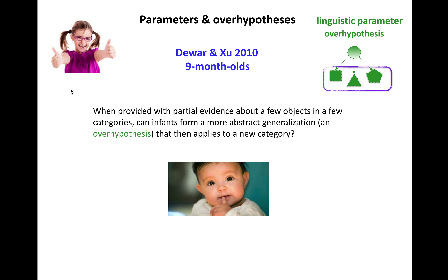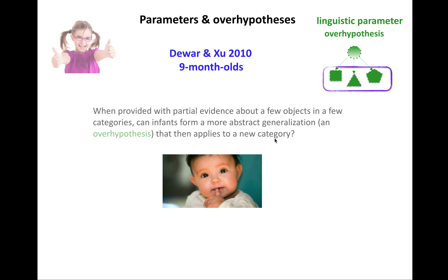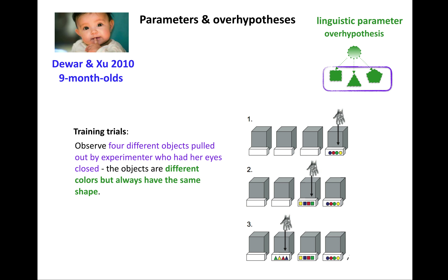Shue in 2010 looked at nine-month-olds to see if they show evidence of using over hypotheses — which are interesting because of how similar they are to linguistic parameters: one more abstract hypothesis connecting to a lot of very specific properties. In this experiment, the idea was that when infants were provided with partial evidence about a few objects and a few categories, can these infants form a more abstract generalization — an over hypothesis — that will then apply to a new property or new category of object they haven't seen before?